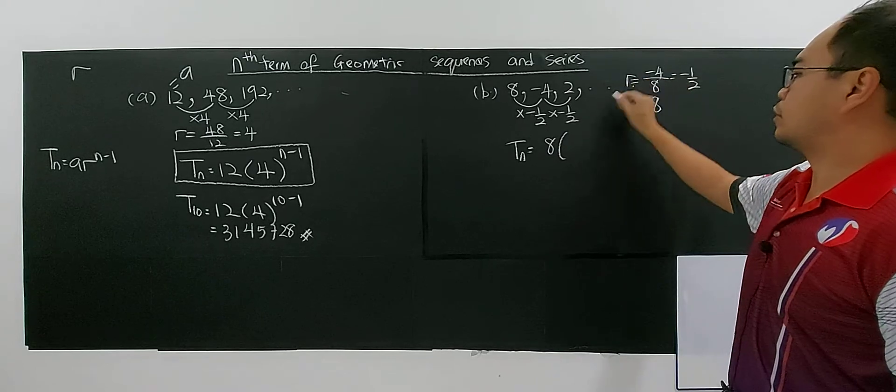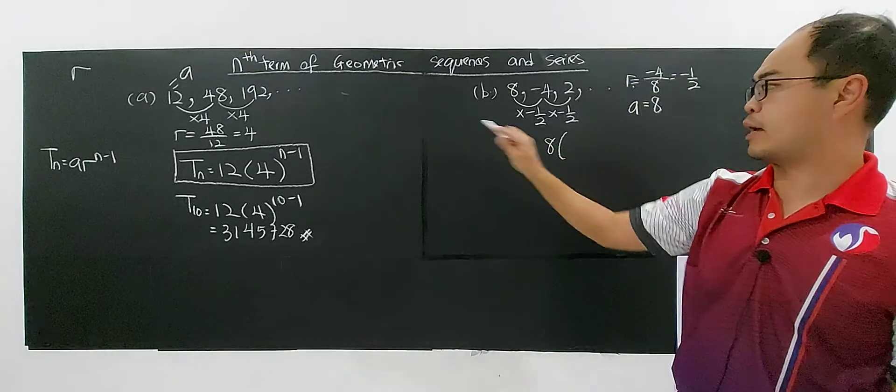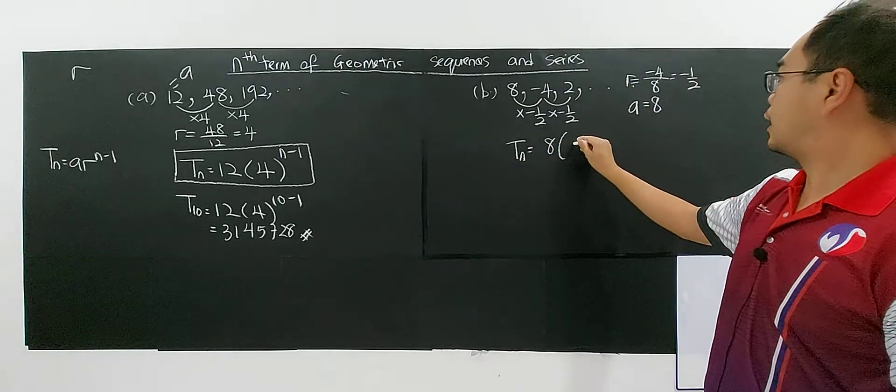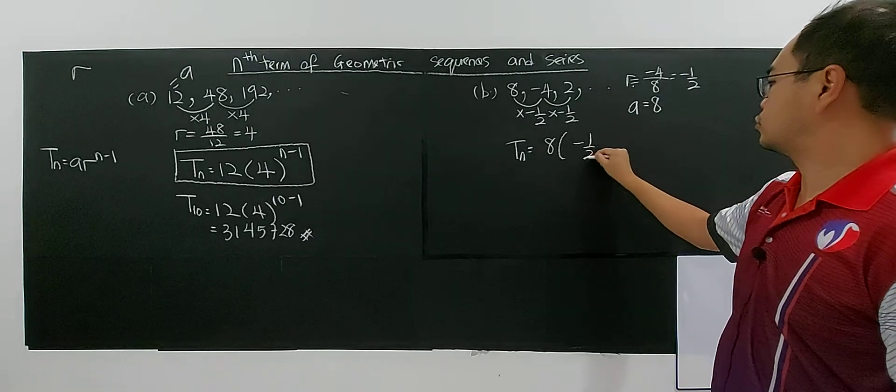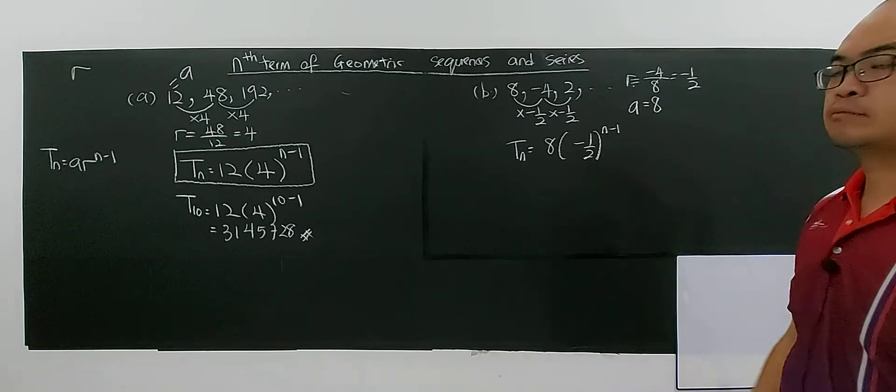And your common ratio formula, A times R. R is negative 1 over 2, power of n minus 1.